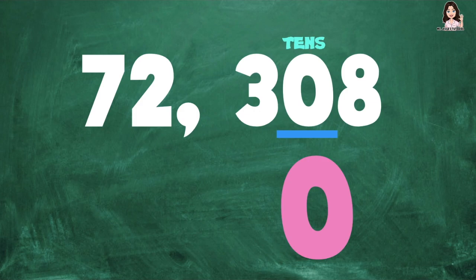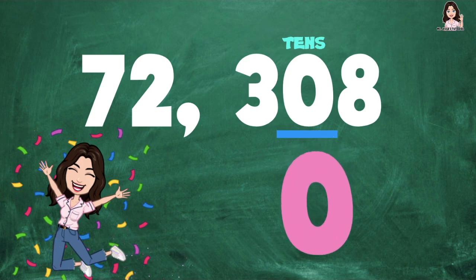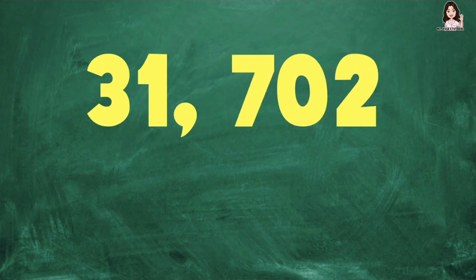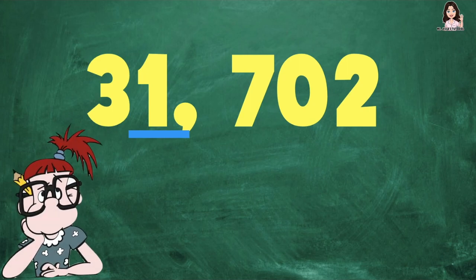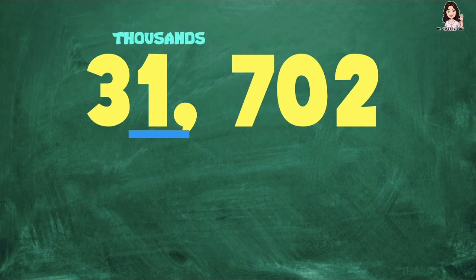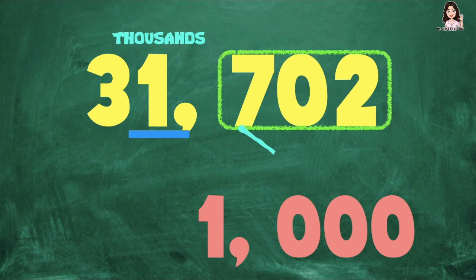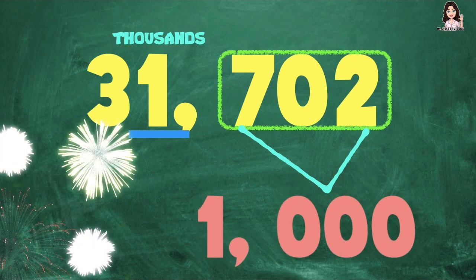How about if we have 31,702? What is the value of digit 1? Since digit 1 is at the thousands place, the value is 1,000. Again, children: all the digits to the right of digit 1 will become zeros. So the value of digit 1 at the thousands place is 1,000.